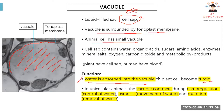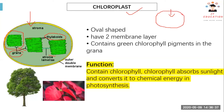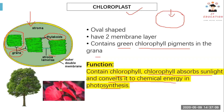The chloroplast contains green pigment called chlorophyll, located in the grana. Chlorophyll is important because it absorbs sunlight and converts it into chemical energy during photosynthesis. Plants stay in place and use sunlight to make food for themselves. Whenever you see a green plant, you know it has chloroplasts.